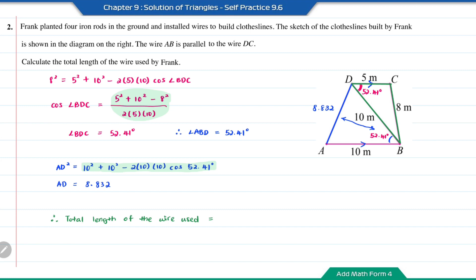Therefore, the total length of the wire used will be 8.832 plus 10 plus 10 plus 5 and plus 8, which is equal to 41.832.